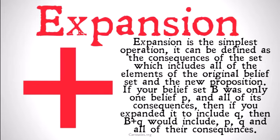Expansion is the simplest. It can be defined as the consequences of the set which includes all of the elements of the original belief set and the new proposition. If your belief set B was only one belief P and all of its consequences, and you expanded it to include Q, then B+Q would include P, Q, and all of their consequences. B+Q is defined as the expansion of B by Q — all of the consequences of anything already in B and all of the consequences of Q as well. Note that this only works when Q doesn't directly contradict something already in the belief set, because if it does, we're going to have to revise our belief set instead of just expanding.